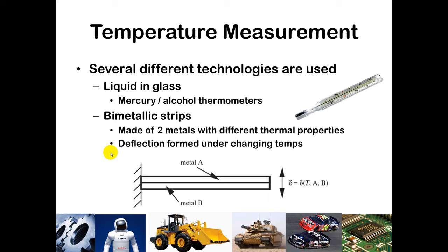Bimetallic strips are another sensor application. Two dissimilar metals are fused together, and in hot or cold environments metals deform: they expand when hot and constrict when cold. Since the two different metals expand or constrict at different rates, the change in deflection can indicate the temperature. This is how many thermostats used to operate — if you open an older thermostat in your home, you'll likely see a metallic strip wound in a circle, using two different metals to determine the change in temperature.